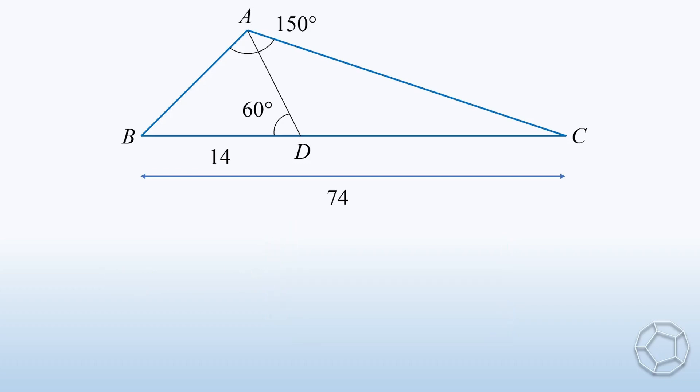First of all, we have DC is equal to 60. Next, we have three unknown sides from the point A. Let them be X, Y, and Z. Now, we need three equations to solve them. Before we set them up, let's figure out this angle theta. Using adjacent angles on straight line, we can easily find that theta is equal to 120 degrees.